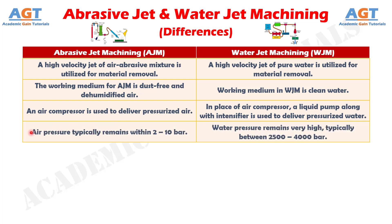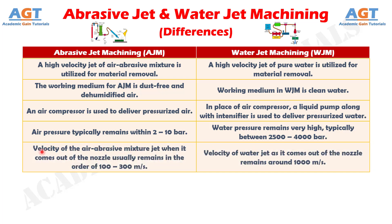Number 4: in abrasive jet machining, air pressure typically remains within 2 to 10 bar, whereas in water jet machining, water pressure remains very high, typically between 2500 to 4000 bar. Number 5: in abrasive jet machining, velocity of the air-abrasive mixture jet as it comes out of the nozzle usually remains in the order of 100 to 300 m per second, whereas in water jet machining, velocity of the water jet as it comes out of the nozzle remains around 1000 m per second.